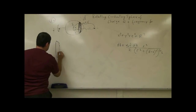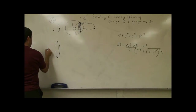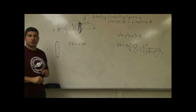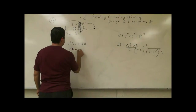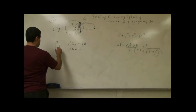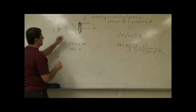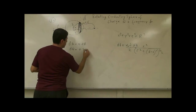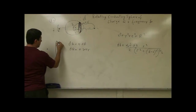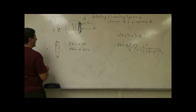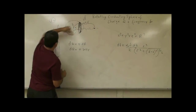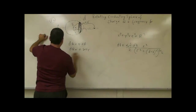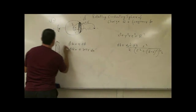We set up the charge element: dq = σ dA, where σ is the surface charge density of the sphere. The area element dA for a ring of radius r and width dx' along the surface is 2πr dx'. So dq = σ · 2πr · dx'. Note that dx' is not simply dx because the sphere's surface is curved — it's coming down — so we call the arc length element dx'.